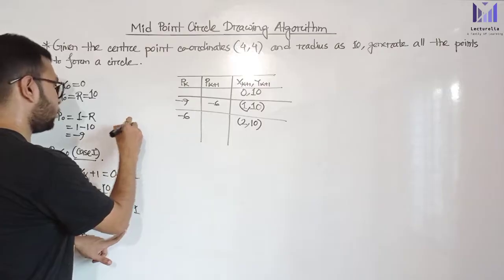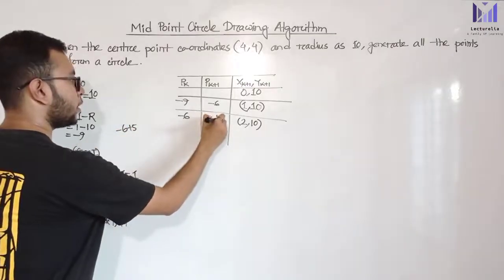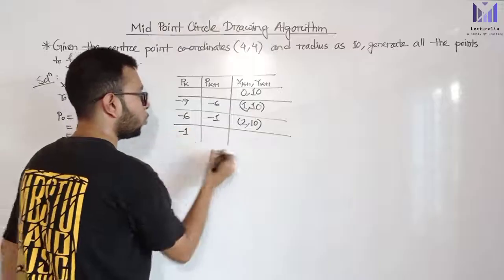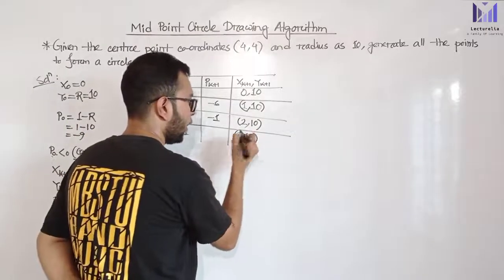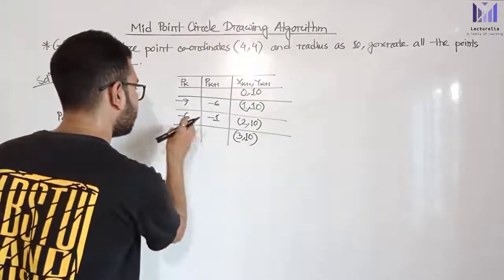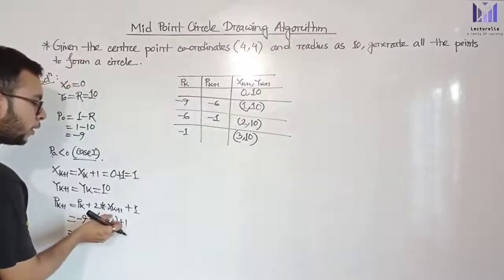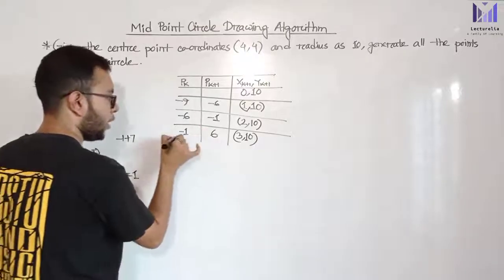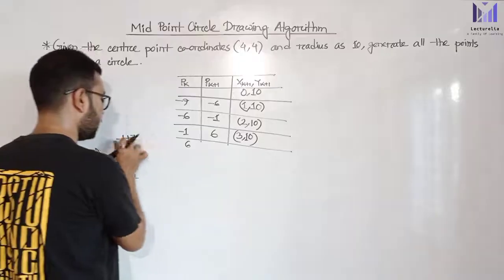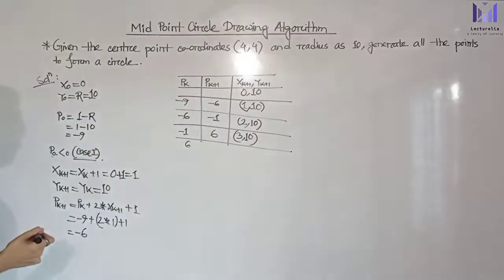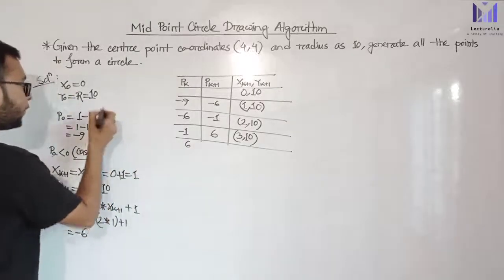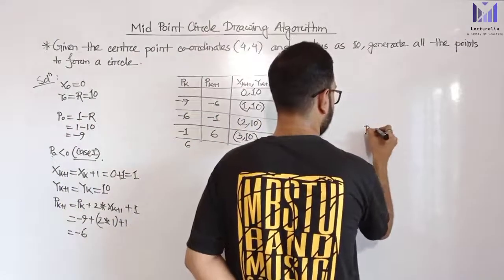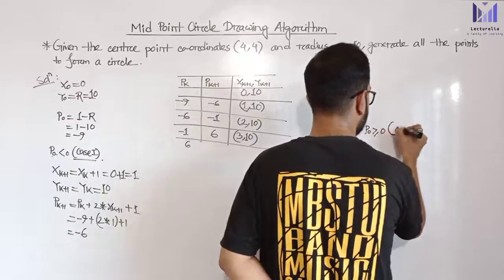6 plus 5 plus 1 minus 1 = minus 1. We further proceed. Minus 1 is again less than zero, so case 1 applies. x value is incremented while y value stays. The next decision parameter: 3 into 2 minus 6 plus 1 = 7 minus 1 = plus 6. We check: 6 is greater than or equal to zero.